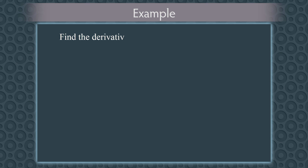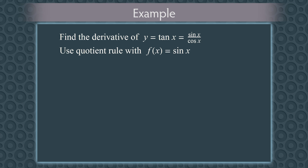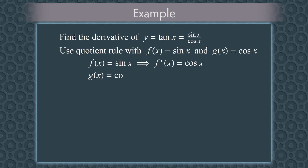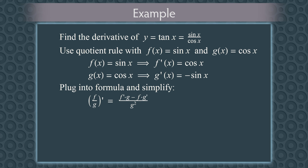Next, let's use the quotient rule to find the derivative of y equals tangent of x. You may have already memorized this derivative, but if not, you can use the quotient rule to find it. Tangent of x equals sine x over cosine of x, so we use the quotient rule with f of x equals sine x and g of x equals cosine of x. The derivative of f is cosine of x, and the derivative of cosine of x is negative sine x. Applying the quotient rule: f prime times g is cosine x times cosine x, minus f times g prime which is sine x times negative sine x, all over cosine squared x.